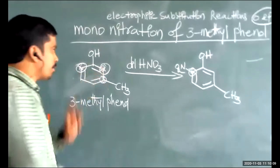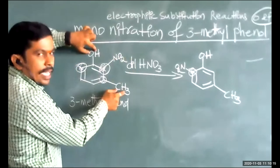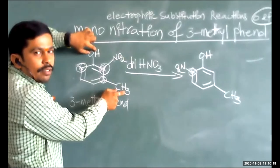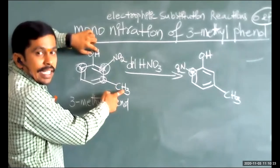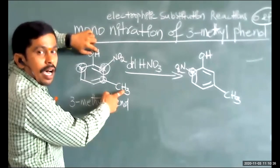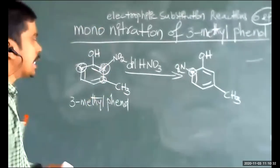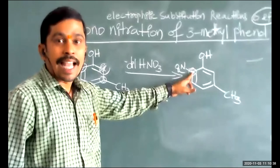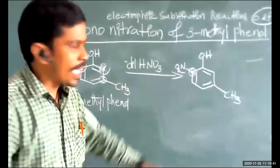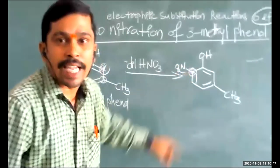If nitration were to take place at the second position, OH and CH3 — two bulky groups — are already nearby, causing steric hindrance and repulsion. So the second position is not substituted with the nitro group. The sixth position has less steric hindrance, so the nitro group is substituted at the sixth position to give the ortho product.